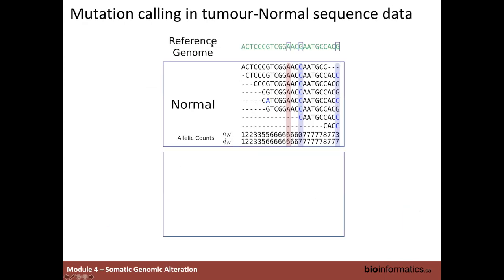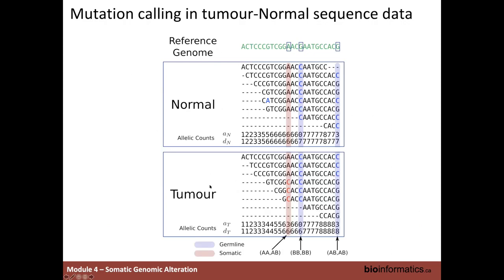Here's conceptually what happens when we do mutation calling. You're aligning your reads to the reference genome for both the normal sample and the tumor sample, and then you jointly assess whether there are any differences from reference and any differences between normal and tumor. In this case, we see two germline events in this patient — they're in the normal sample, so compared to the reference sequence, this person has a C where there is a G in the reference, and in the tumor it's also C. So this is just a germline variant — you pick it up because you're doing mutation calling relative to the reference, but you don't care about it because it's not different between normal and tumor.